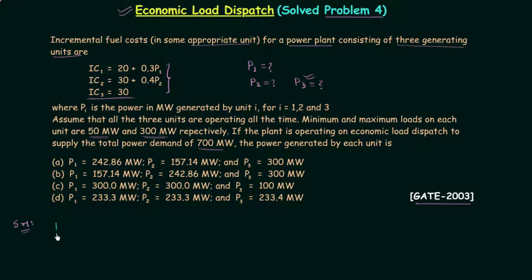Therefore P3, the power generated by the third unit, is equal to 300 megawatt. Looking at the four options, the first two options have P3 equal to 300 megawatt but the last two do not, so options C and D are incorrect. We now choose between options A and B.